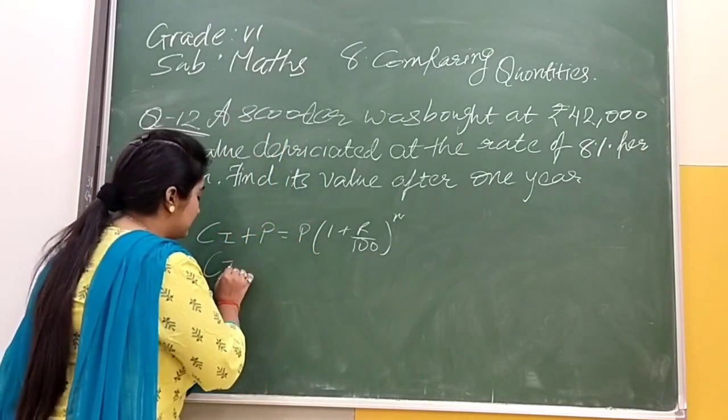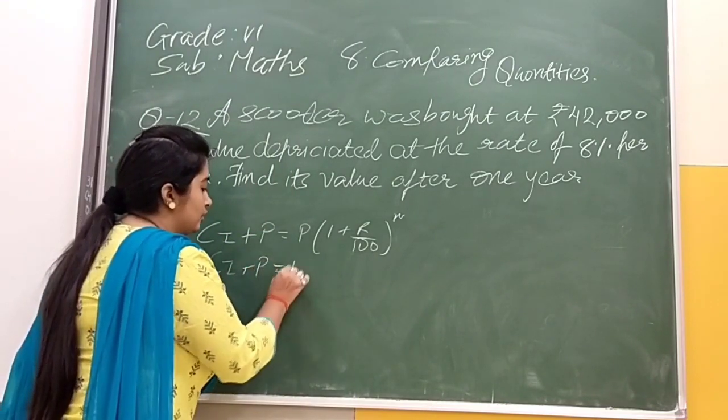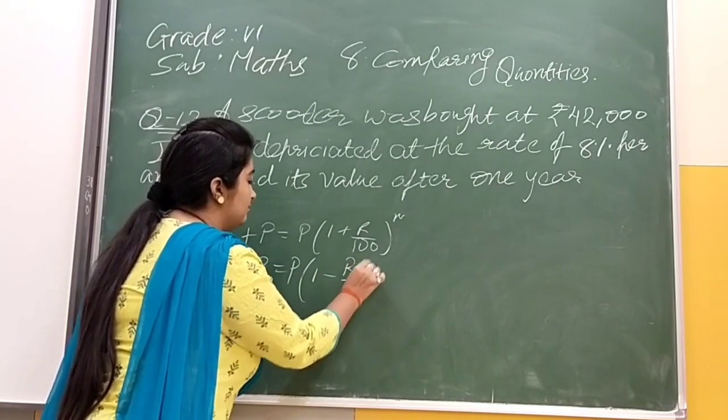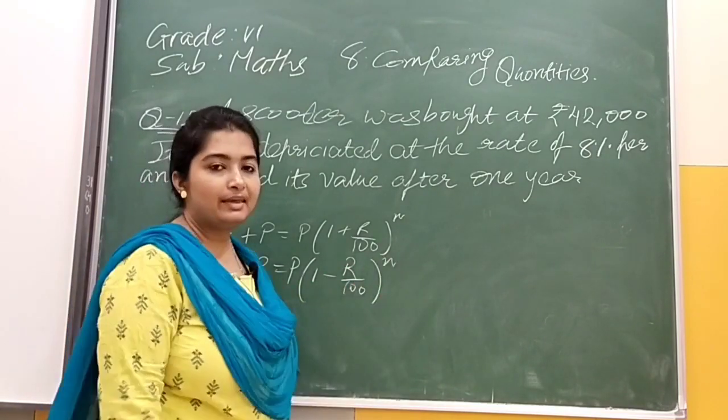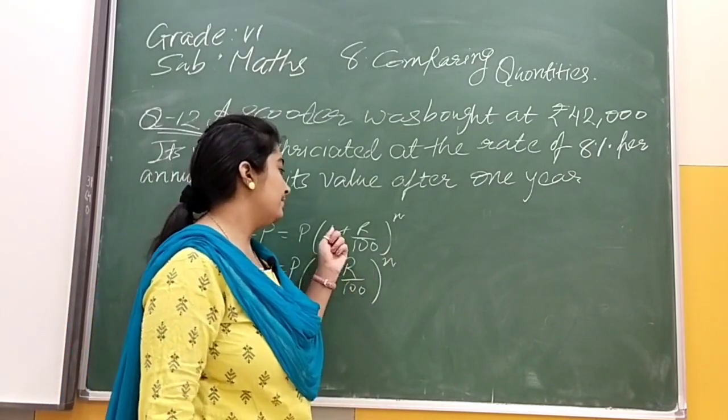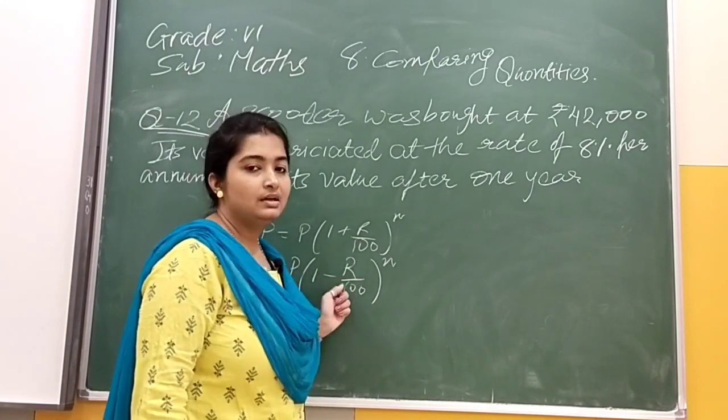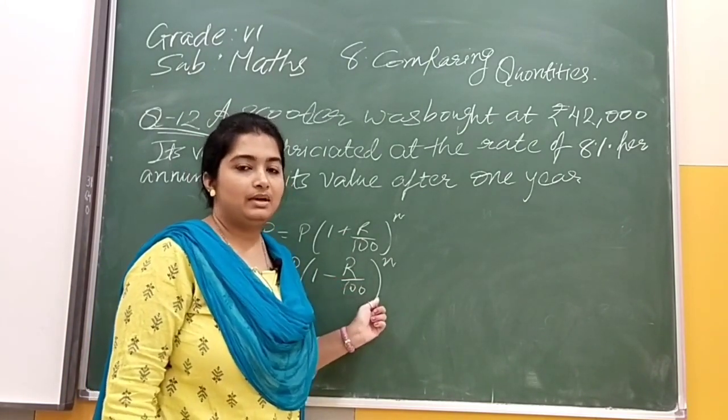So for that we will use CI+P = P(1 - r/100)^n. The formula is similar, but instead of plus we will have minus here. We will put a minus sign.